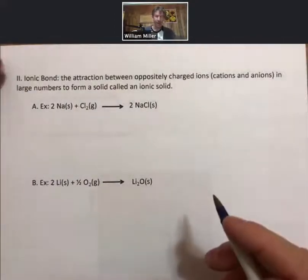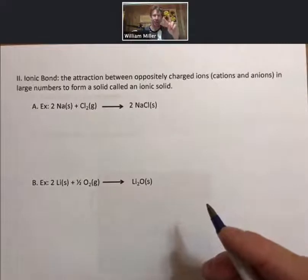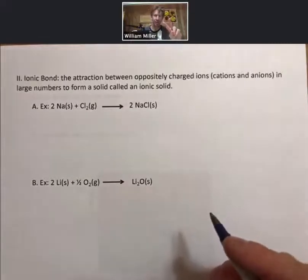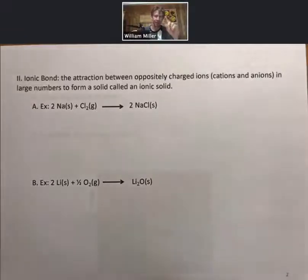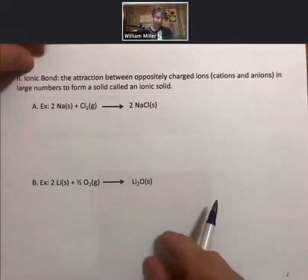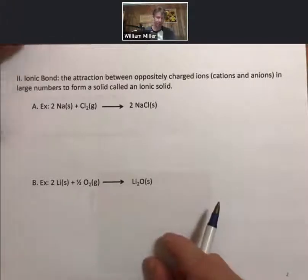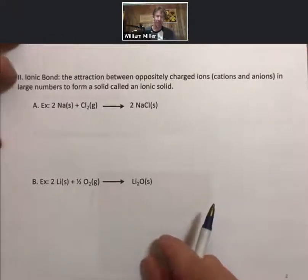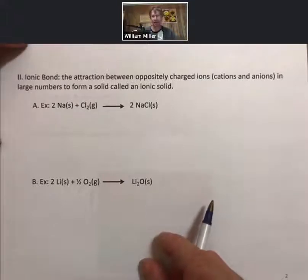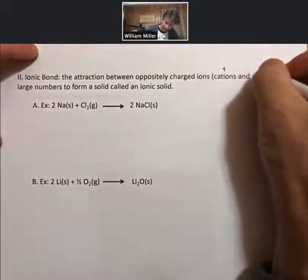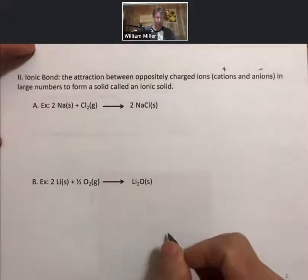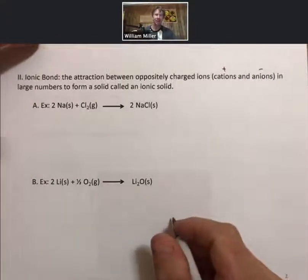There are two types of bonds, and only two types of bonds in general chemistry. Those are ionic bonds and covalent bonds. Let's talk about ionic bonds first. An ionic bond is the attraction between oppositely charged ions — those are cations, which are positive, and anions, which are negative — in large numbers to form a solid called an ionic solid.